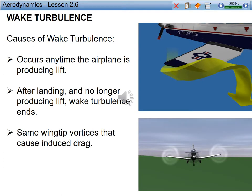So, wake turbulence — what is it? What causes it? Is it a good thing or a bad thing? Ultimately, what kind of effect is it going to have on my performance, whether I'm in a T-6, a C-130, or the H-1 Whiskey Super Cobra? Wake turbulence is something that can always affect you. It occurs any time an airplane is producing lift. After landing, when no longer producing lift, wake turbulence is going to be ending. It's the same wingtip vortices that cause induced drag, so any time your aircraft is flying and producing induced drag, you're also producing wake turbulence.